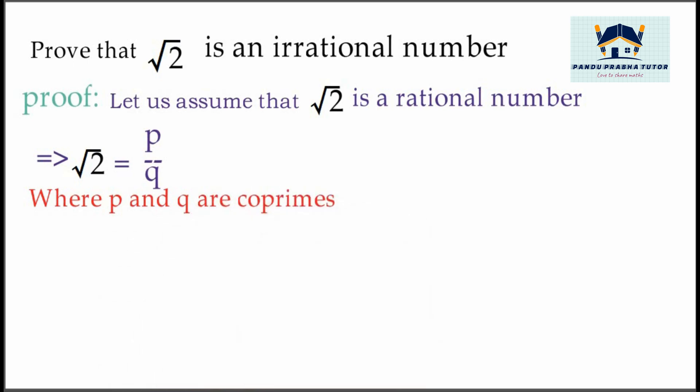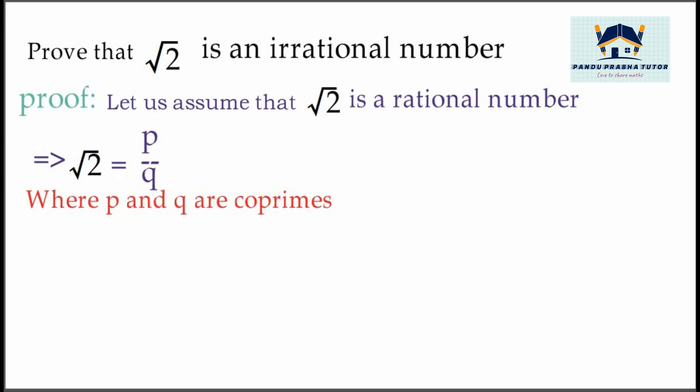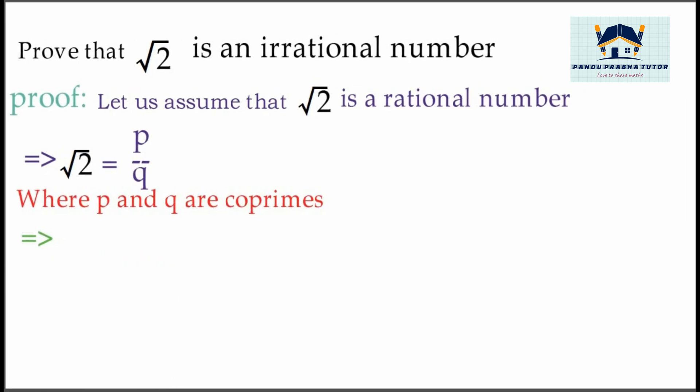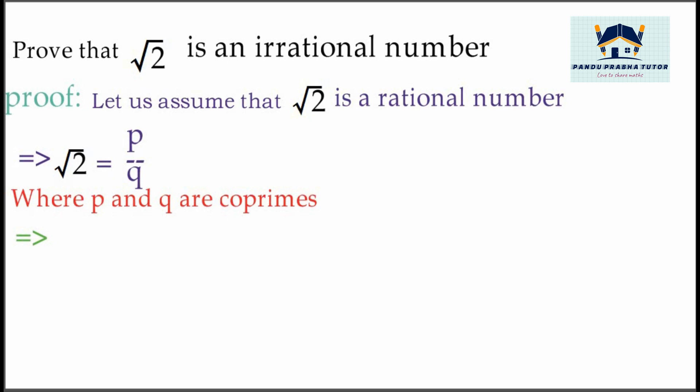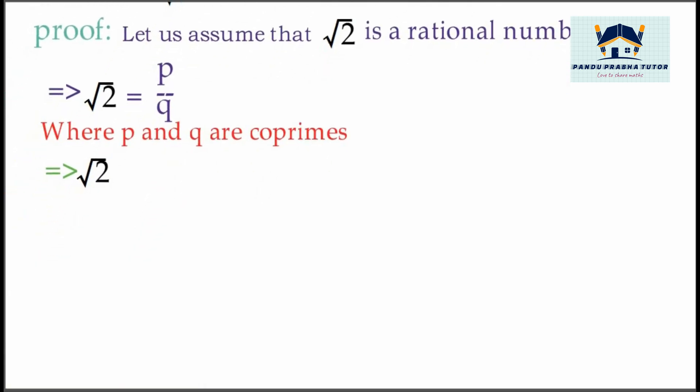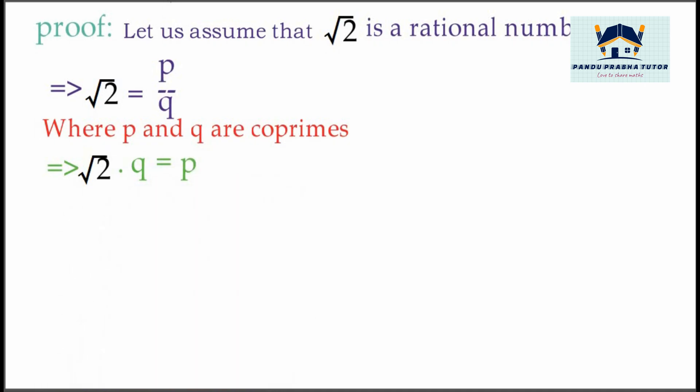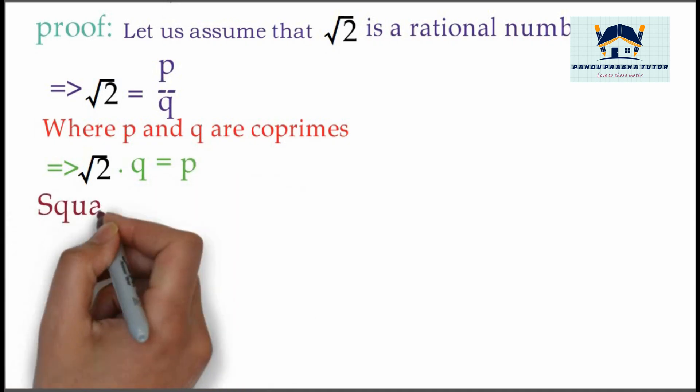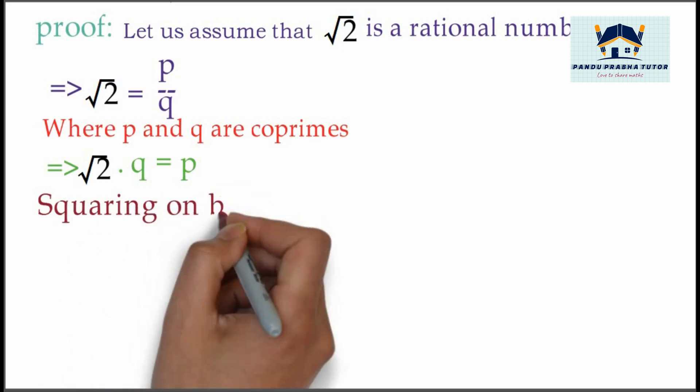Co-primes means they have common factor 1 only; there is no other number as a common factor. Now we are going to cross multiply: √2 times q equals p. Squaring on both sides...